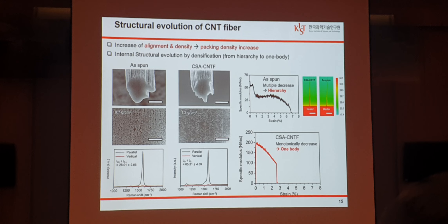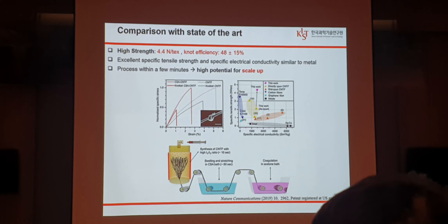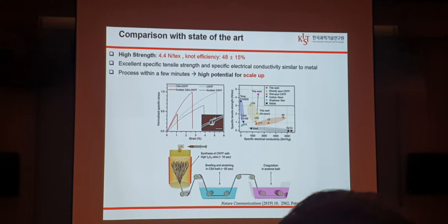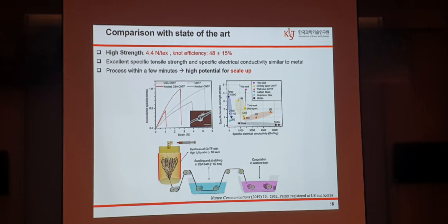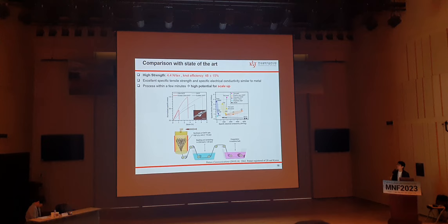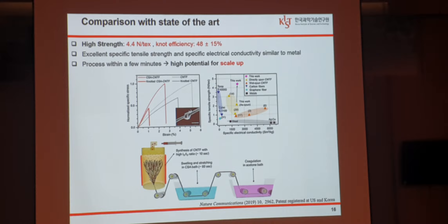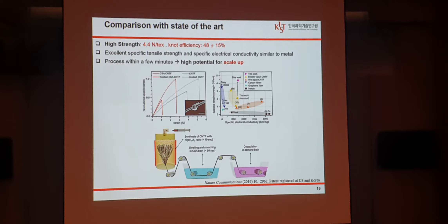As a result, our densified CNT fiber exhibits very high specific tensile strength of around 4.4 N/tex, better than that of carbon fiber T-1000, and specific electrical conductivity similar to metals. Additionally, our CNT fiber possesses high flexibility with notch efficiency around 50%. The significance of this study lies in the fact that our process has high potential for scaling up because it is simple, fast, and efficient compared to other methods.